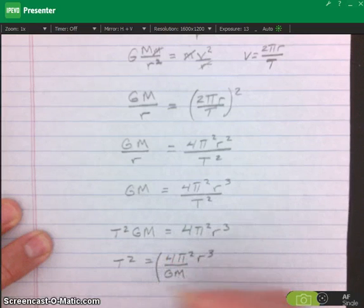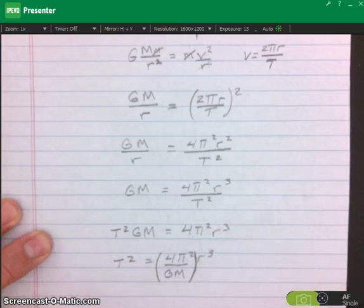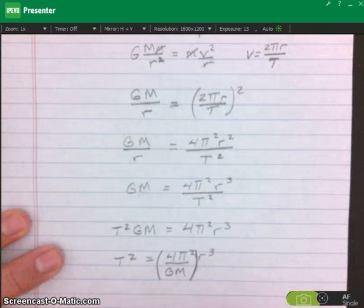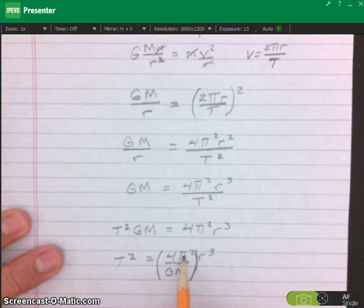And I really want to group these guys together. That's because for all of the orbits of planets in our solar system, this constant 4, this constant pi, this constant G, and the mass of the Sun all together are constant.